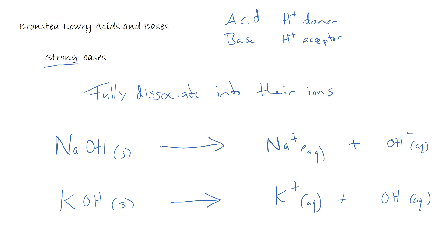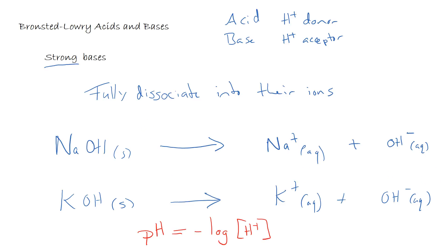In our previous lecture we discussed that pH is equal to the minus log of the concentration of hydrogen ions. When we looked at strong acids, this was easy because the concentration of hydrogen ions was simply the same as the concentration of the acid. Here we've got a problem though, because if we're trying to work out the pH of a hydroxide solution, we don't know anything about the hydrogen ions, and therefore we need to come up with a new way of calculating the concentration of hydrogen ions.